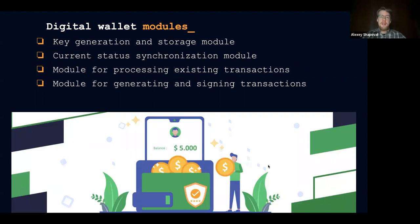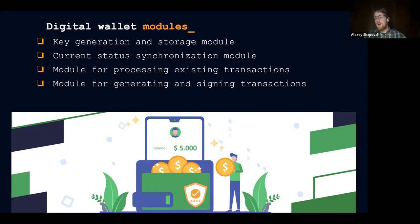The first module is key generation and storage. Depending on whatever system you are operating with — be it Bitcoin, Ethereum, Monero, or Bitcoin Cash — the wallet will follow the protocol and generate keys according to the rules of that protocol. For example, depending on the digital signature mechanism, the wallet will use different types of keys and different key generation mechanisms to satisfy the protocol requirements so that your signatures will be valid.